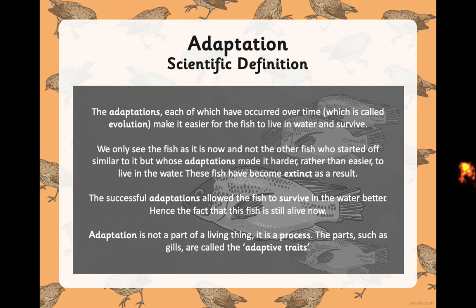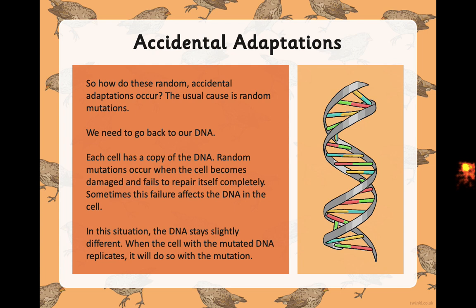How do these random accidental adaptations occur? The usual cause is random mutation — and mutation means to change. We need to go back to our DNA, that microchip inside all our cells. Each cell has a copy of the DNA. Random mutations occur when the cell becomes damaged and fails to repair itself completely. Sometimes this failure affects the DNA in the cell — the DNA stays slightly different, changed beyond repair. It becomes mutated and stays like that. When the cell with the mutated DNA replicates or copies itself, it does so with the mutation.